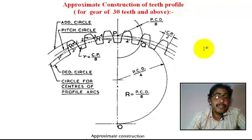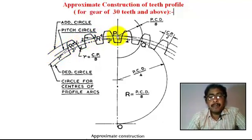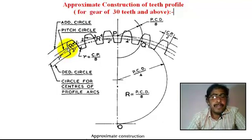We take the measurement CP by 2 in the pencil compass and mark on the pitch circle. This point and this point — this is CP by 2 on the pitch circle. Point 2 is marked as CP by 2.